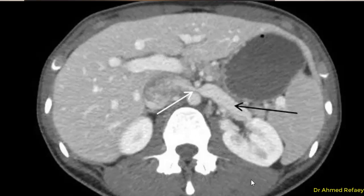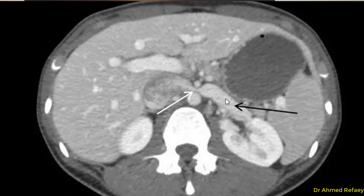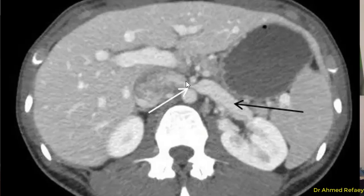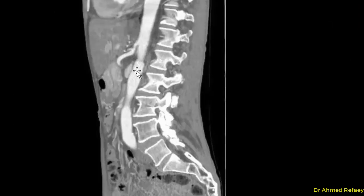Regarding the diagnosis of Nutcracker Syndrome by CT scan: on this axial CT of the upper abdomen, we can see the left kidney, the aorta, and the superior mesenteric artery. The proximal left renal vein is markedly dilated compared to the markedly stenosed or compressed segment of the left renal vein as it passes between the superior mesenteric artery and the aorta. The compression ratio can also be measured here — the caliber of the proximal dilated renal vein divided by the caliber at the region of stenosis.